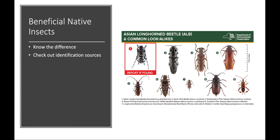Some invasive pests can look like or be confused with our beneficial native insects, so it's really good to know the difference. Here's a picture of lookalikes to the Asian longhorned beetle — the Asian longhorned beetle is in the red circle and is compared to some native beetles from New York state that have long abdomens or long antennae. There are key features to tell the difference between the two, and if you're not sure, you can always contact your local Department of Agriculture for assistance with identifying insects.